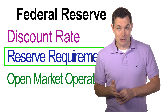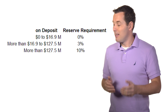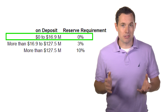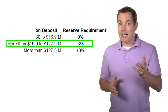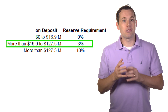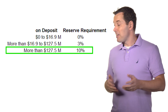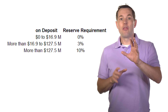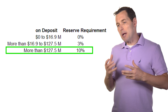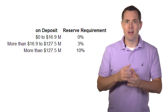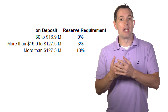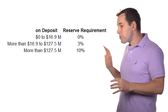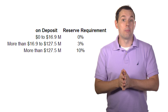Now we're shifting over to reserve requirements. Before the pandemic hit, the smallest banks didn't have to have any reserve requirements. Mid-tier banks had to have at least three percent, and the largest banks were required to have a ten percent reserve requirement. I'm simplifying this — there are many exceptions depending on account type — but broadly speaking, that's what it looked like before the most recent economic collapse.